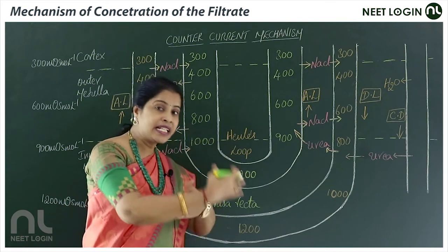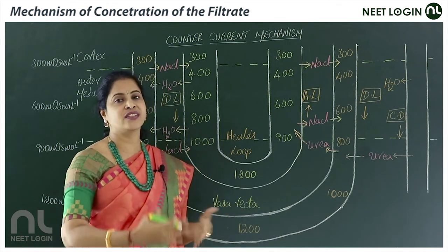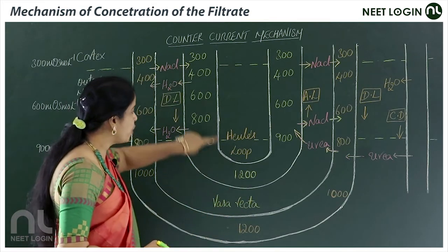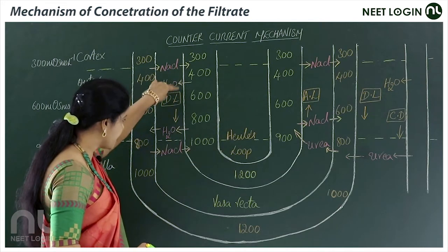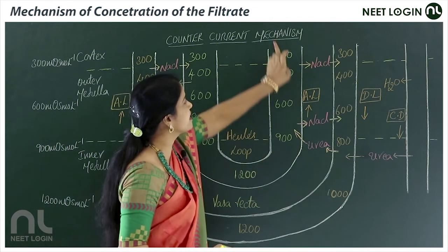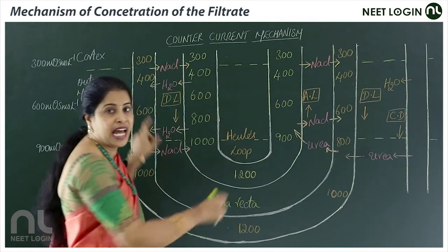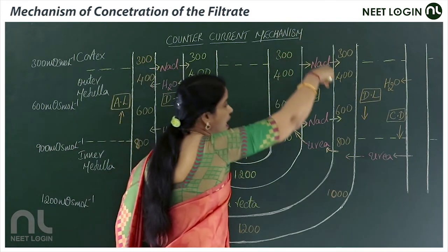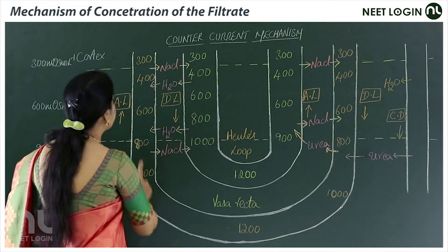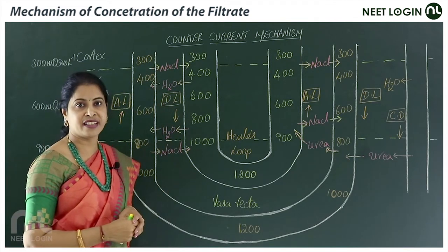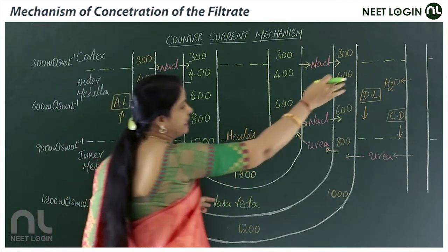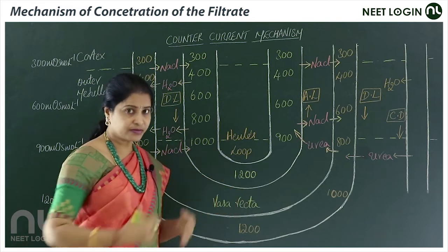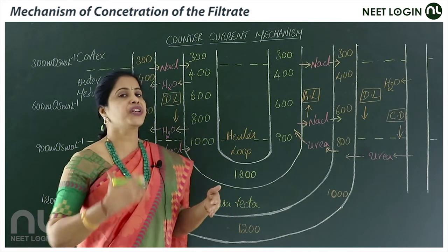Looking at the diagram, this is the loop of Henle — observe it carefully. This is the descending limb of the loop of Henle, and this is the ascending limb. The blood vessels running parallel to the loop of Henle are the vasa recta, with its descending and ascending limbs. This is the collecting duct, involved in tubular secretion and selective reabsorption.